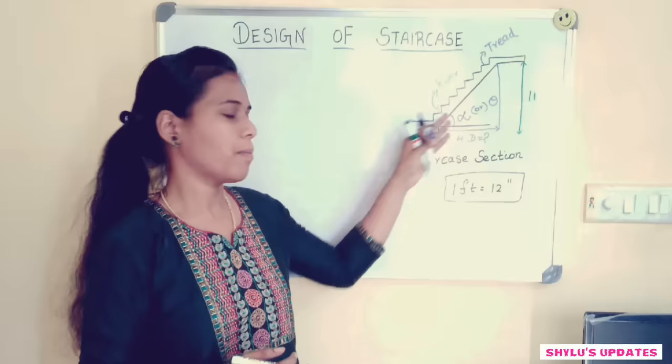Now we know the values for riser, tread, number of steps, number of risers, horizontal distance, and pitch. This is the basic design of a staircase. Hope you liked this video. If you did, please subscribe to my channel, like and share. If you have any doubt, please comment below. Thank you so much.